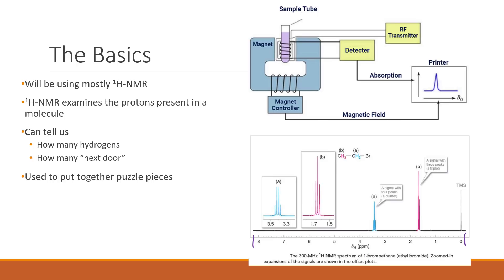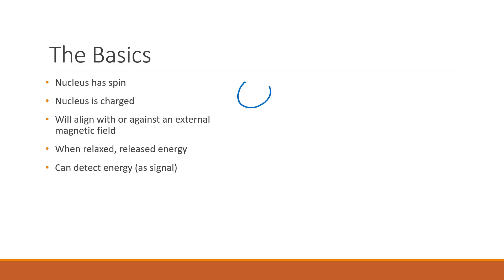Think of it like a compass pointing north - if you forcibly push the needle of the compass to face in the opposite direction, it takes energy to do that. Normally a compass wants to align with the Earth's magnetic field. When you let go of the compass needle it spins back around and aligns with the Earth's magnetic field, releasing energy. It takes energy to forcibly flip the alignment and energy is released when you let go.